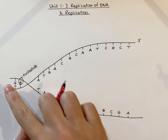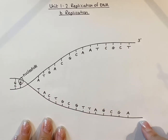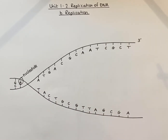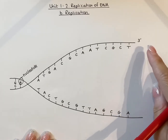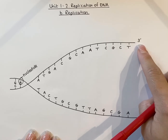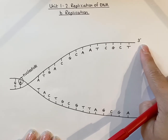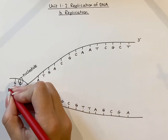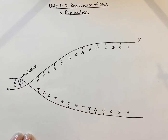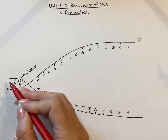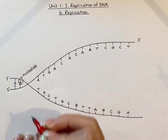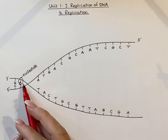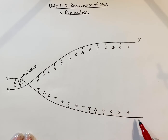This whole part here is one strand, and then this whole part here is another strand. Now, I'd like to talk about the prime ends. This ends with a three prime end, which is what ends in a deoxyribose sugar. Therefore, along this strand down here would be a five prime end. And because this is a five prime end, the other side should be a three prime end. Following it along in this anti-parallel arrangement, this would therefore bear a five prime end, which would end in a phosphate.